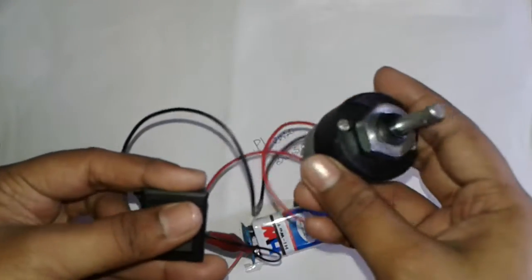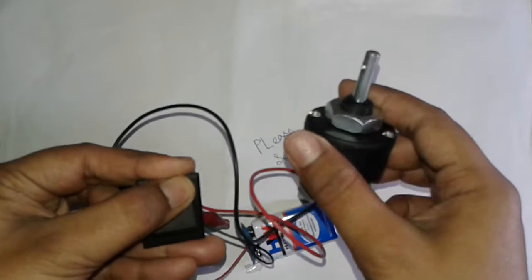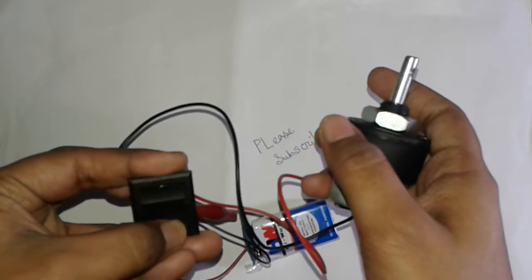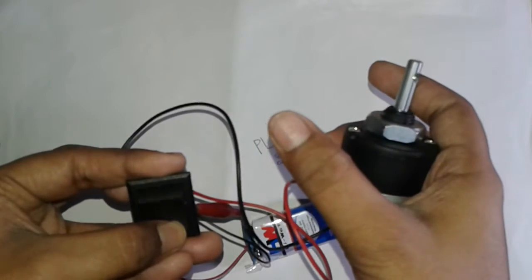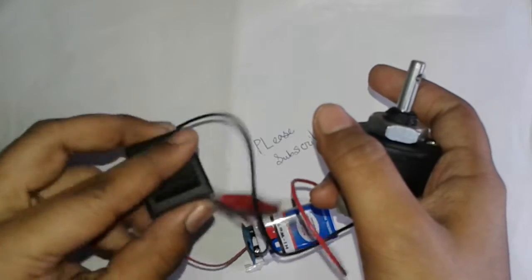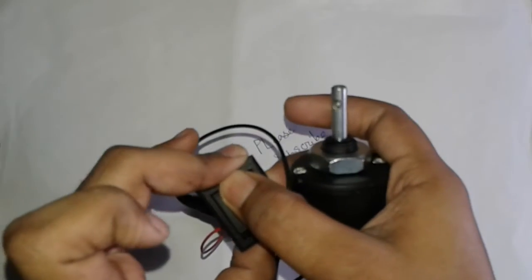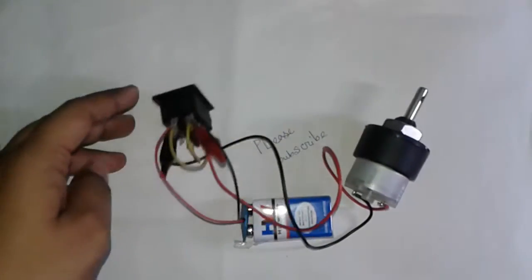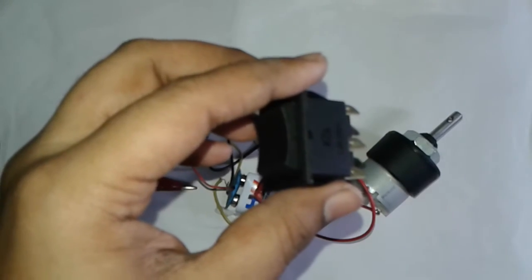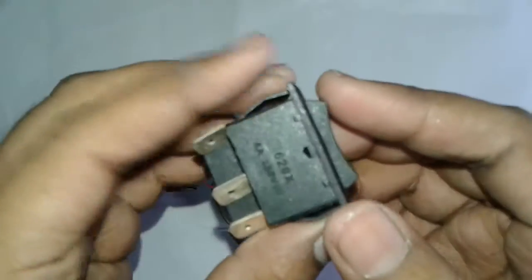You can see when I press the forward button it rotates in that direction, and when I press the backward button it rotates in that direction. So let's start making it. The DPDT switch has six pins and the motion can be forward and backward.